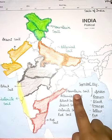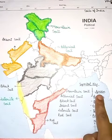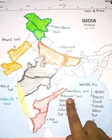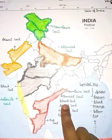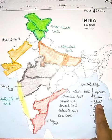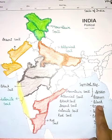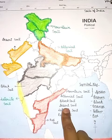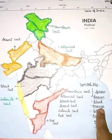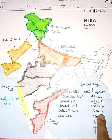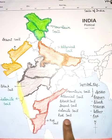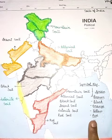Mountain soil — green. Alluvial soil — brown. Black soil — black. Desert soil — orange. Laterite soil — yellow. Red soil — red.